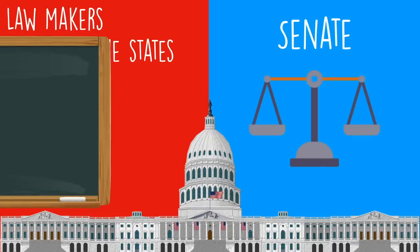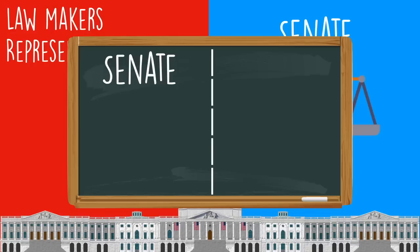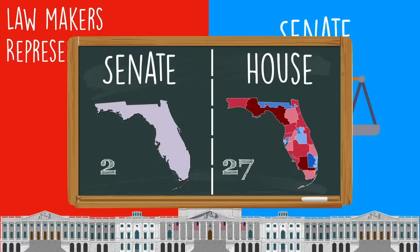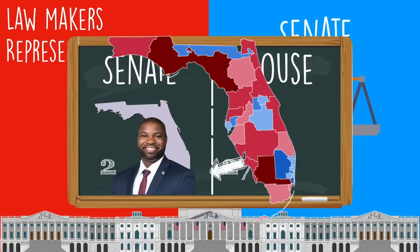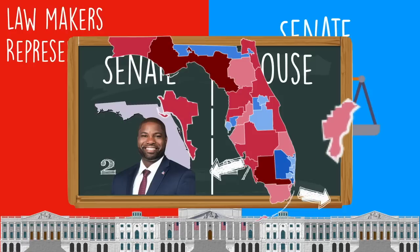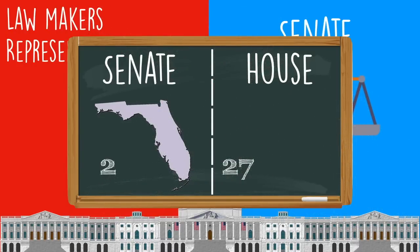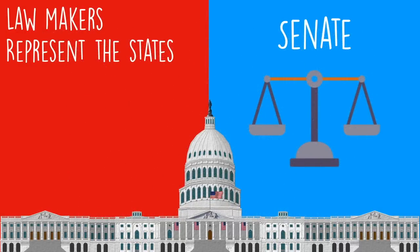Senators are said to represent the states, while members of the House represent the people. Because the state of Florida and every state in America has only two senators, anyone from the state can call either one — they both represent the entire state. But in the House of Representatives, states with more population are divided into districts depending on how many representatives your state has. Florida has 27 members of the House and so they have 27 districts. So that's what it means when they say senators represent the state — because there's only two for every single state, they represent everyone without caring about districts or population.